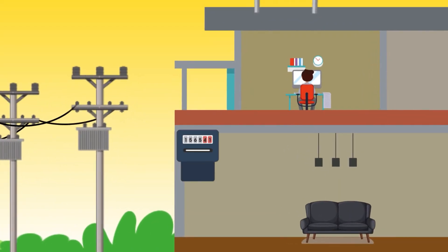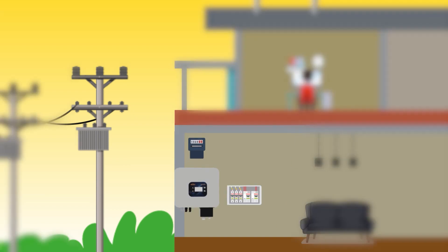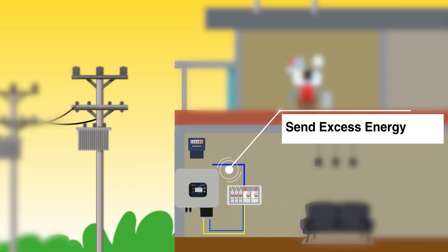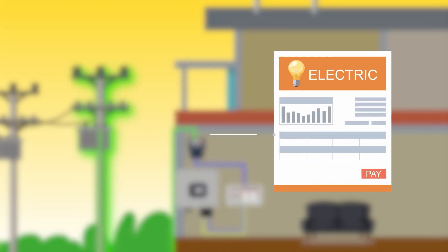Net metering is a billing tool that allows you to send the excess energy that solar panels generate to the local grid in exchange for credits on your monthly electricity bills.